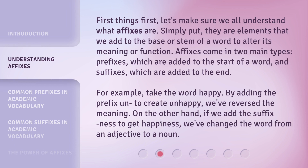First things first, let's make sure we all understand what affixes are. Simply put, they are elements that we add to the base or stem of a word to alter its meaning or function. Affixes come in two main types: prefixes, which are added to the start of a word, and suffixes, which are added to the end.